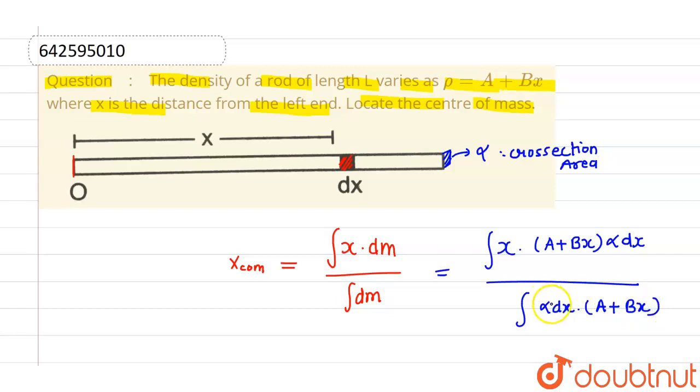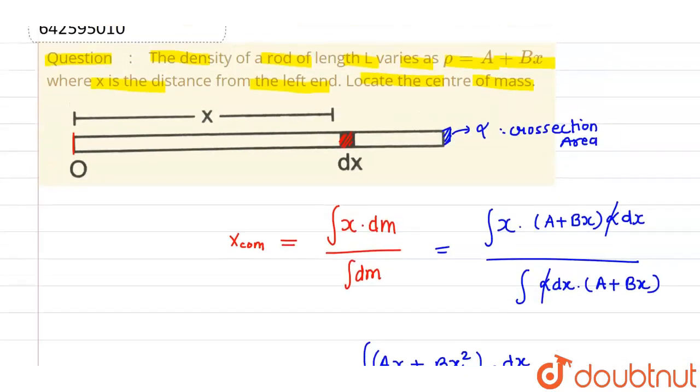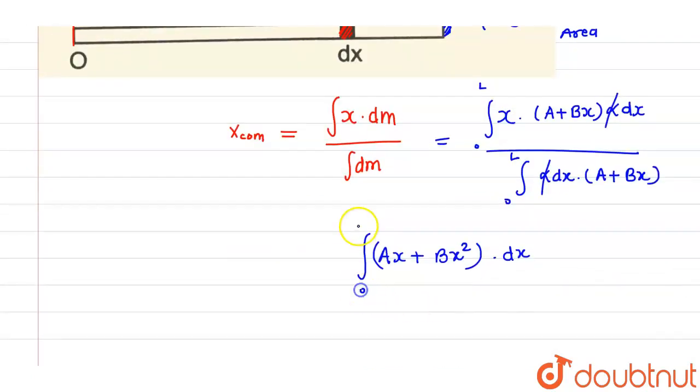Now since this alpha is constant, so alpha will cancel out. Overall, I will be getting integration of ax plus bx square into dx, and that integration is from 0 to L. Since the length of this particular rod is L, so integration will be from 0 to L. Divided by integration of dm which is nothing but a plus bx into dx and this integration is also from 0 to L. This is the x coordinate of center of mass.